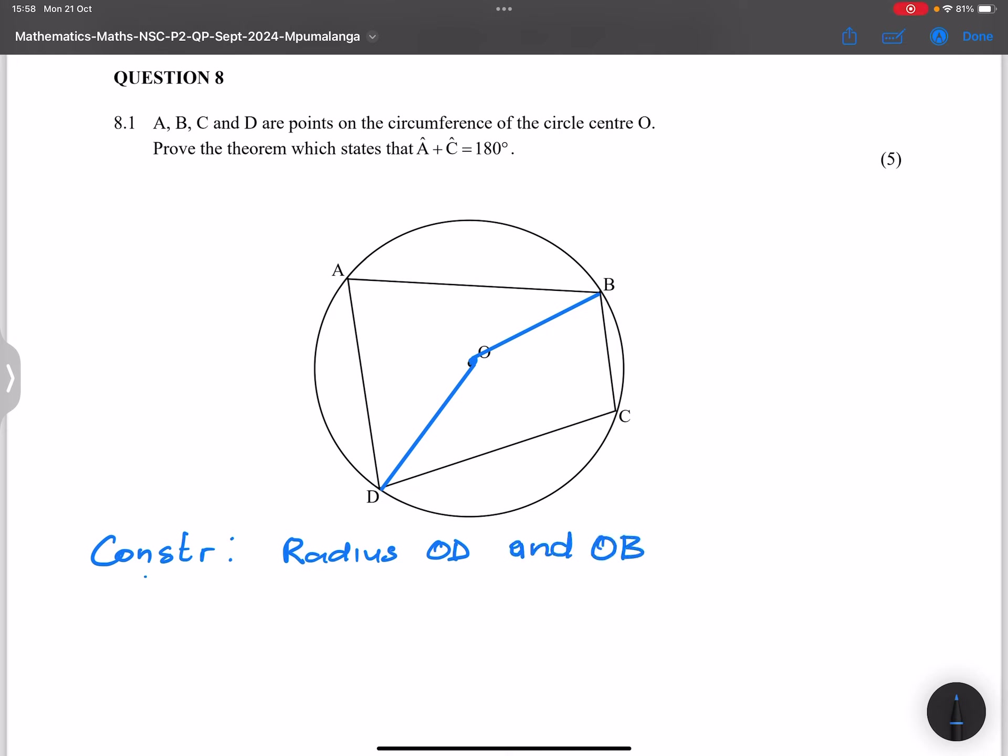So that we know that angle DOB will be two times the angle DAB. Why is that? Angle at center is two times the angle at circumference.